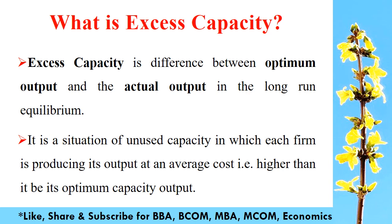Under optimum output, long run average cost is minimum. We can say that excess capacity is a situation of unused capacity in which each firm is producing its output at an average cost that is higher than it could be at its optimum capacity output.